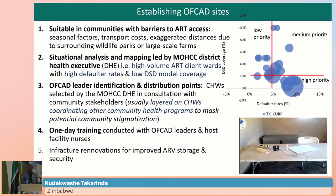Some key steps which are vital in establishing OFF-CARD models are, first and foremost, identifying areas that have barriers to access. In our case, we have areas where seasonal factors prohibit clients from crossing bridges to get access to facilities, exaggerated transport costs, or some areas which are around large-scale farms or wildlife parks.